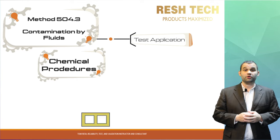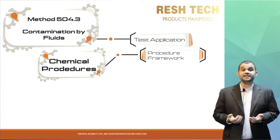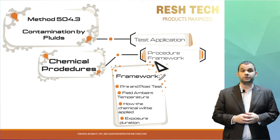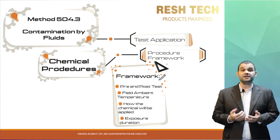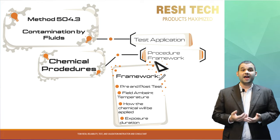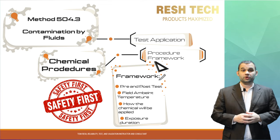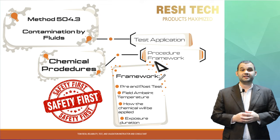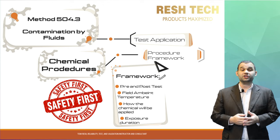Let's cover the framework for the procedure for contamination by fluid. As mentioned previously, you need to have a pre- and post-test check to ensure that the testing event did not cause any degradation or hard failures of your system. You will then need to execute your test based on your system's field ambient temperature conditions, chemical application method, and exposure type durations. Don't forget to wear PPE and make sure you are working in a well-ventilated area, and that others in the vicinity also have PPE to prevent exposure to potentially harmful contaminants.